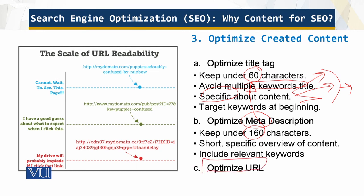If your URL looks overly complex, you will scare people away from clicking on it. A clean, readable URL is more acceptable and much better — it makes people want to know what's behind that URL. So you have to take all of these things into consideration in order to draw traffic and get a high rank in search results.